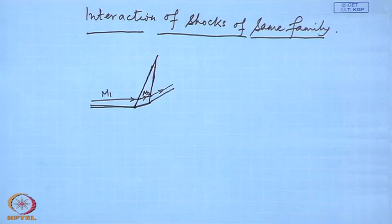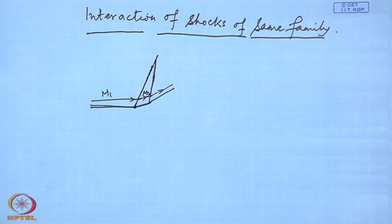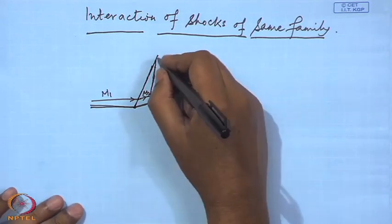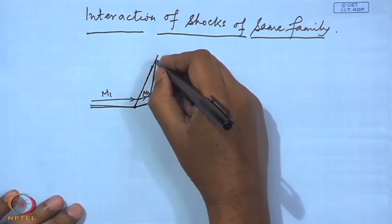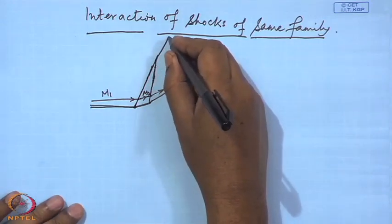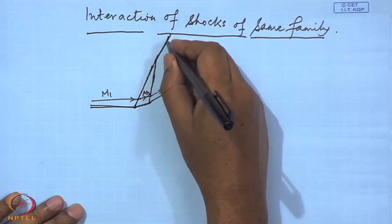In this case, the shocks being of the same family, they do not pass through — they cannot pass through. Rather, they coalesce to form a single stronger shock; they merge together.